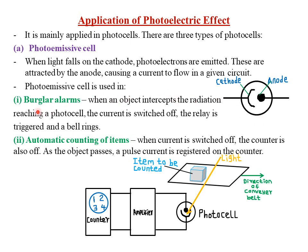When an intruder intercepts or blocks the incident radiation falling on the cathode, no photoelectrons are emitted and the circuit is switched off. The relay is then triggered, the bell rings, and you are able to know there is an intruder trying to enter your home so you can take necessary actions.